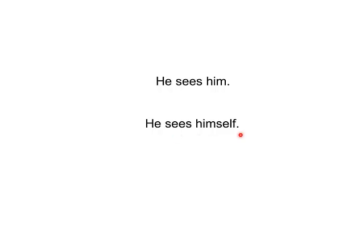If we want to say that these are the same people, we actually have to add something in English: 'He sees himself.' Now we know that this person is exactly the same person as that person. This pronoun reflects back to the subject — it refers to the same person that the subject refers to. Up here in the top sentence, 'him' refers to a totally different person. That is just a personal pronoun. 'Himself' is a reflexive pronoun.